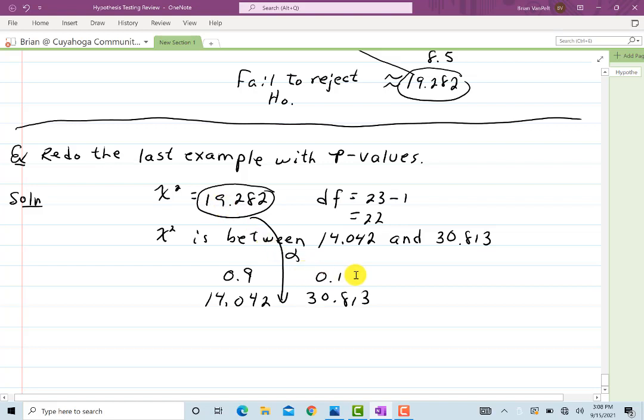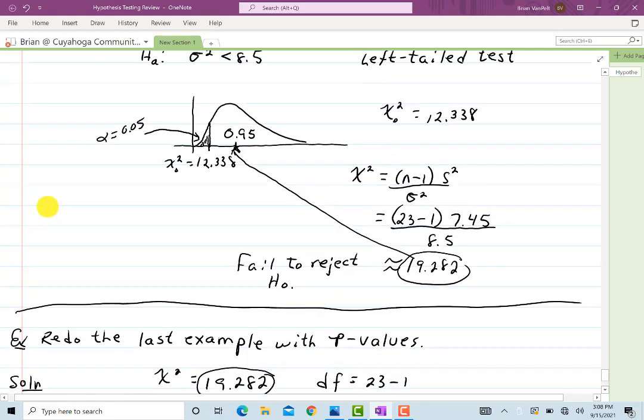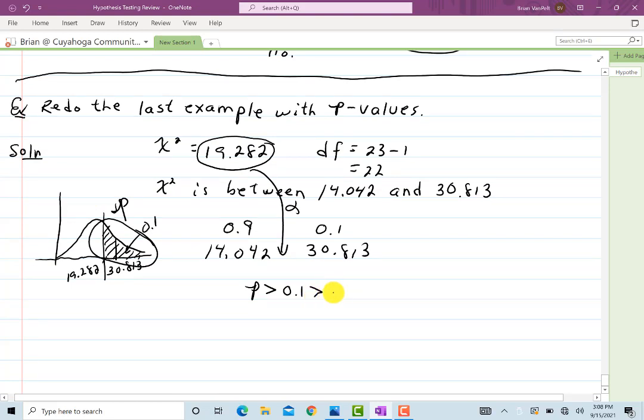So if I were to draw a picture, I know that the 30 has 0.1 in there. And my chi-squared is a little bit less than that, it's over here somewhere. So my p value is all of this. So I can see that p is greater than 0.1. And the alpha in this example was actually just 0.05. 0.1 is greater than 0.05, so there's no question p is greater than 0.05. And that implies that we fail to reject H naught.